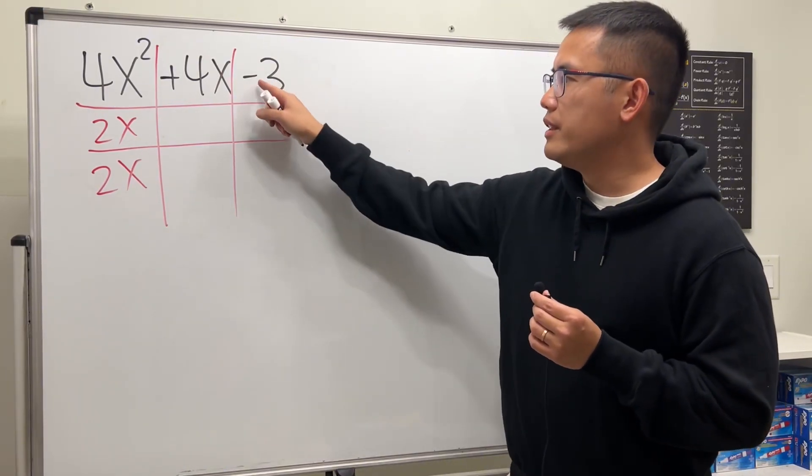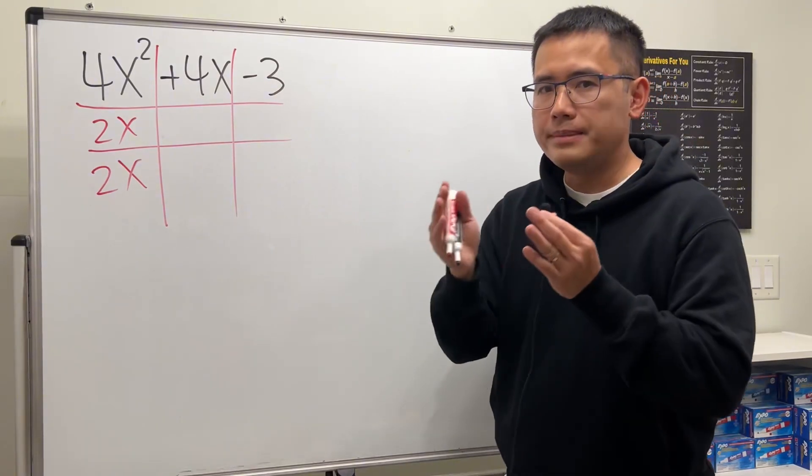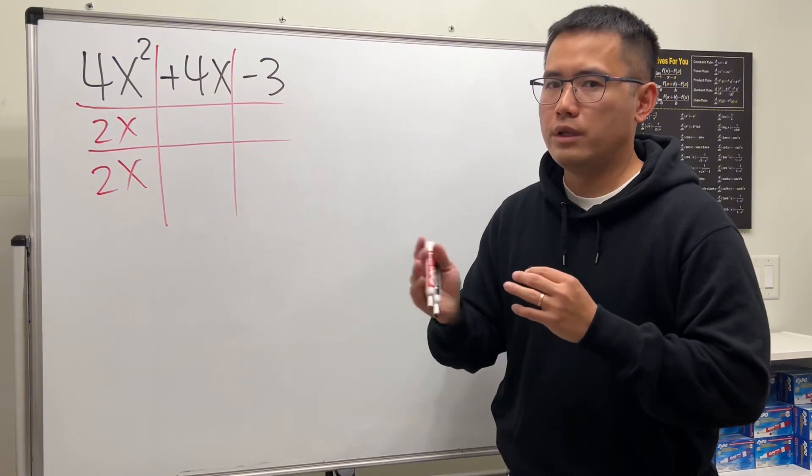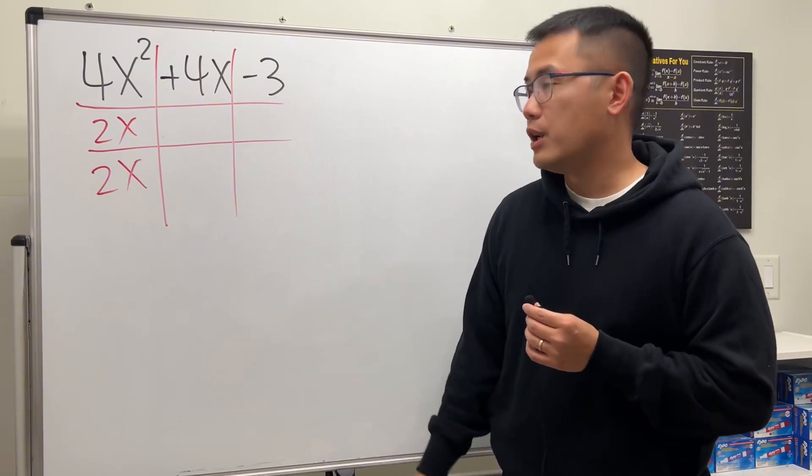Then I will ask myself what times what will give us negative 3: 1 times negative 3 or negative 1 times 3. Again, which one do we use? Have a look.